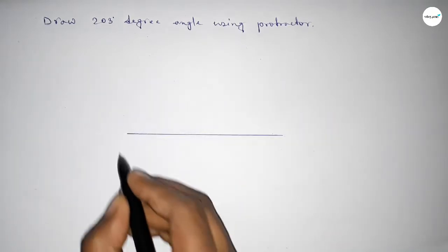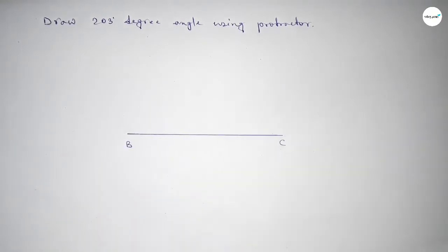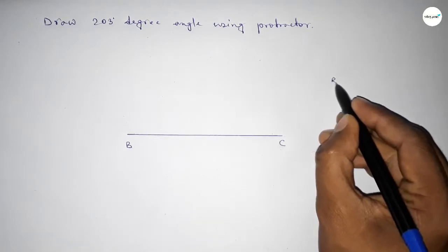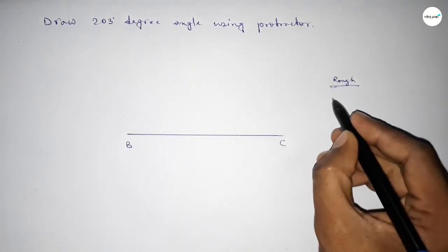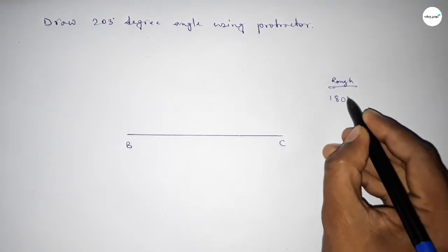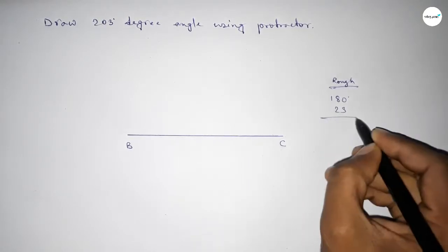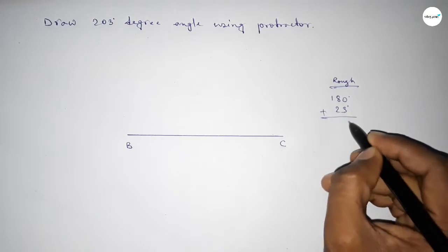First drawing here a line and taking here point B and here point C. Now roughly discussing here some calculation. So if we add 23 degree angle with 180 degree then we can get 203 degree.